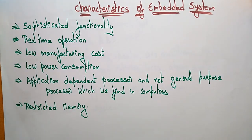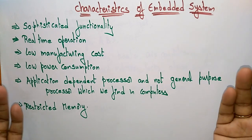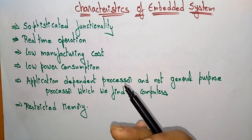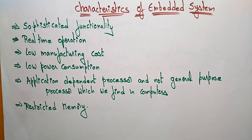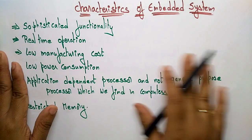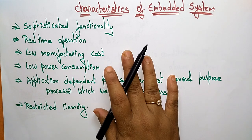The degree of sophistication can vary from appliance to appliance. If you take the microwave oven, the washing machine, or the mobile phone, for each appliance the degree of sophistication may be varying. All embedded systems are implemented with sophisticated functionality.